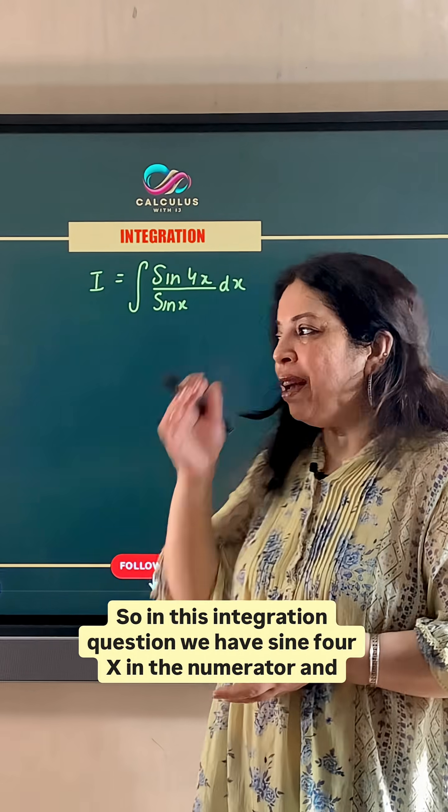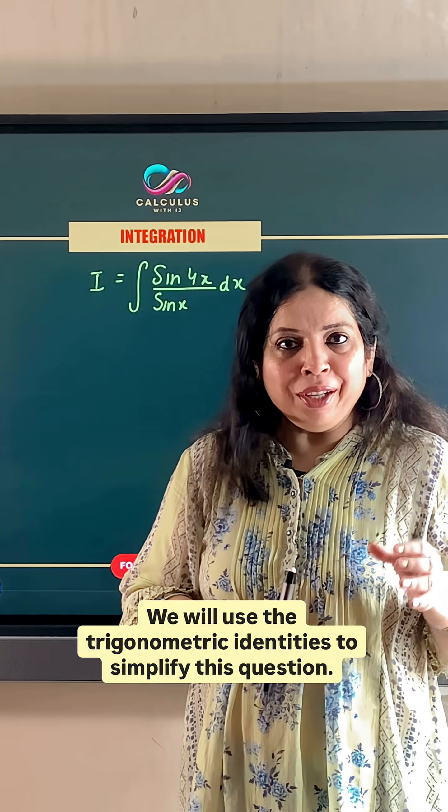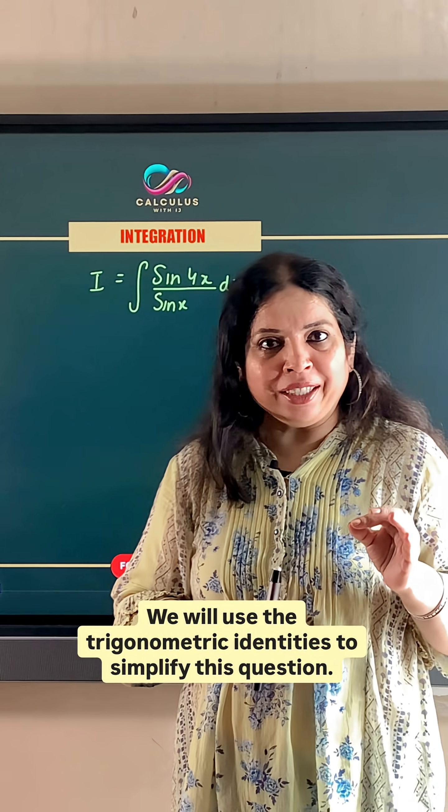So, in this integration question, we have sin 4x in the numerator and sin x in the denominator. We will use the trigonometric identities to simplify this question.